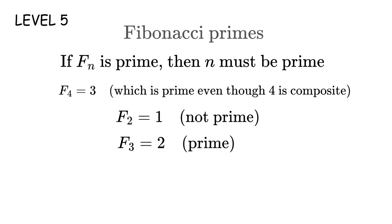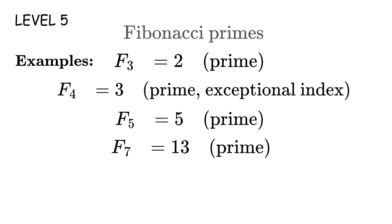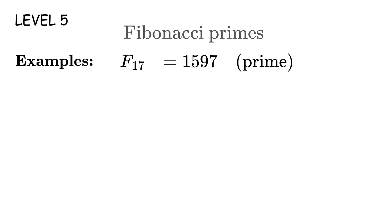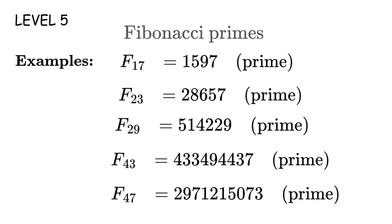So F_2 equals 1, not prime. F_3 equals 2, prime. F_5 equals 5, prime. F_7 equals 13, prime. You only need to check Fibonacci numbers where the index is prime. Let's list them out. F_3 equals 2, prime. F_4 equals 3, prime. And that's our exception. F_5 equals 5, prime. F_7 equals 13, prime. F_11 equals 89, prime. F_13 equals 233, prime. F_17 equals 1,597, prime. F_23 equals 28,657, prime. F_29 equals 514,229, prime. F_43 equals 433,494,437, prime. F_47 equals 2,971,215,073, prime.